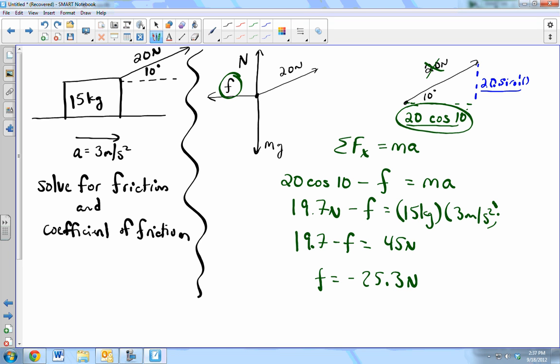Friction is acting opposite of the direction we call positive. We, at a habit, have called the direction of acceleration positive. So we said this way is positive. Friction acts against that. So it's going to be negative. Now the actual value for friction is going to be a positive number. 25.3 newtons. It was only negative because our mathematics told us that it was the opposite way that we thought. So the friction is 25.3 newtons.